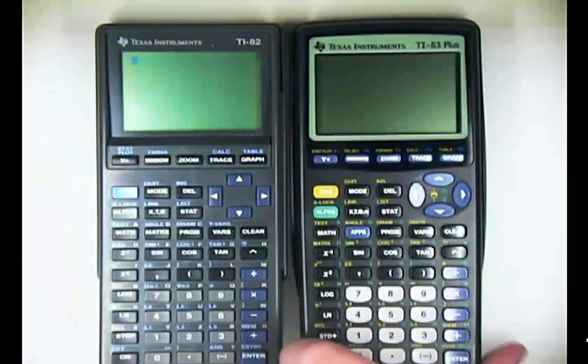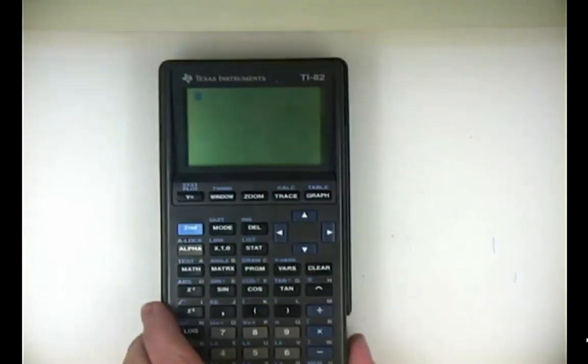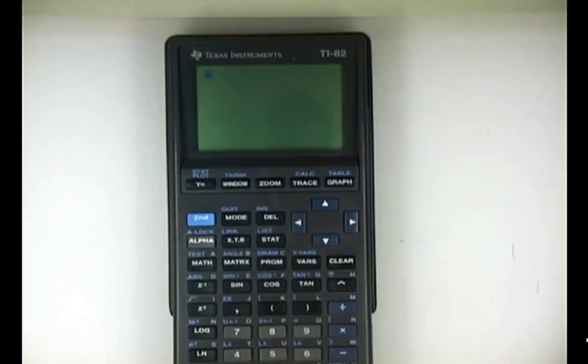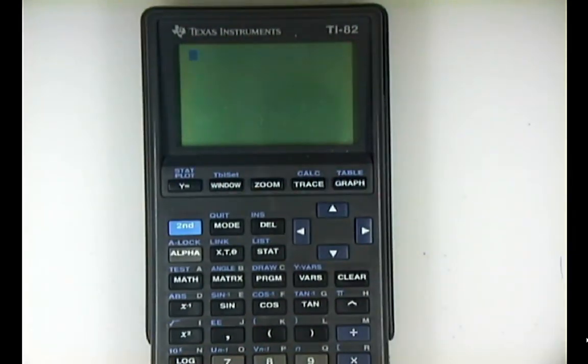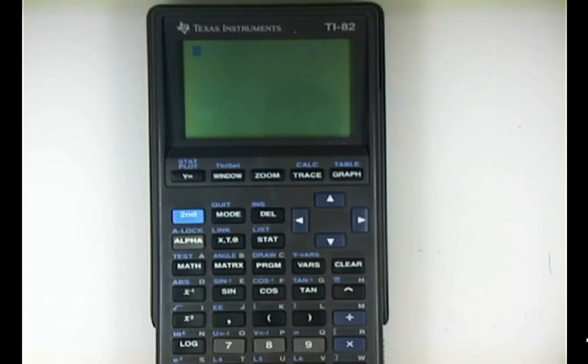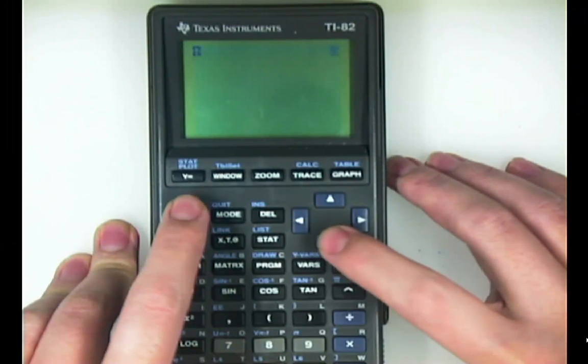The 82 is not a useless calculator; it's not completely obsolete yet as far as statistics go. If you want to darken the screen, you press second up, and if you want to lighten the screen, second down, like you do with all calculators.